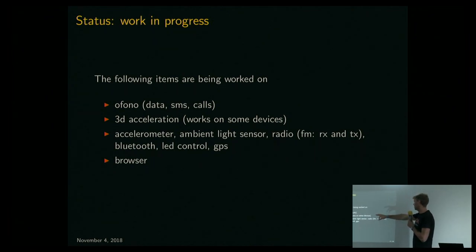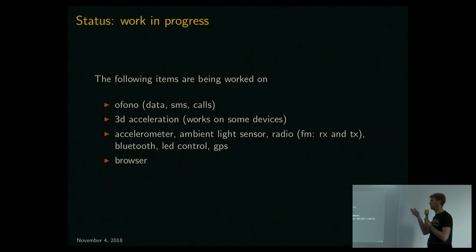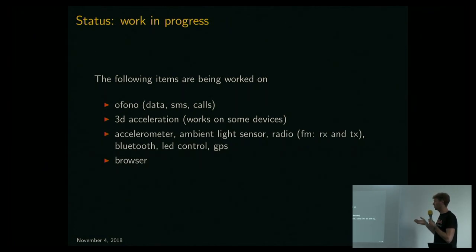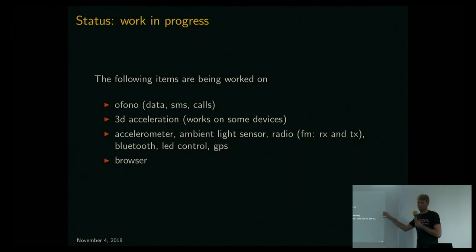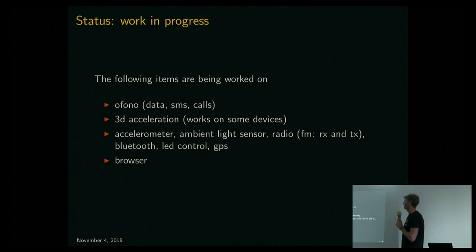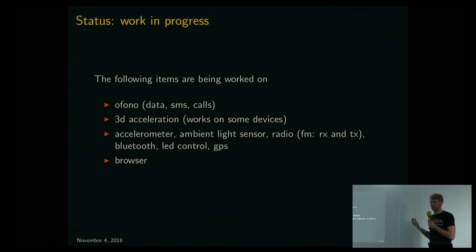Other hardware features that should work at least on the N900 include the accelerometer, ambient light sensor — for example to turn off the screen when held to your ear during a call — FM radio receive and transmit, Bluetooth, LED control, and GPS. A really cool thing about the N900 is that you can transmit FM radio: play something on your phone, set it to 90 MHz, tune your car radio to the same frequency, and hear the music over the radio. The browser is another challenge — browsers in Debian are usually not optimized for mobile usage, and depending on the device you might not have enough RAM for a modern browser.